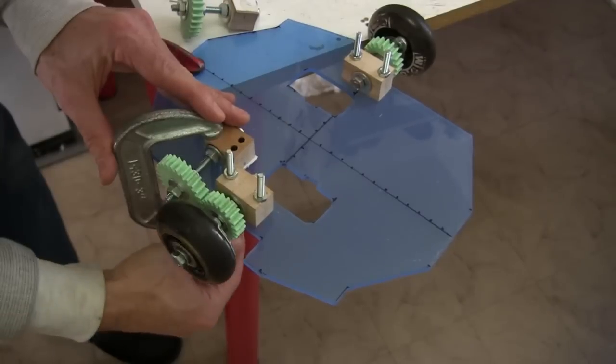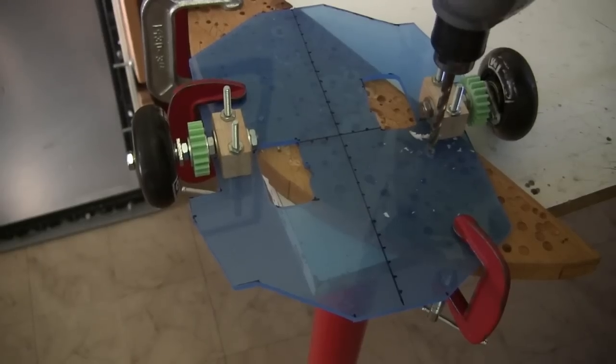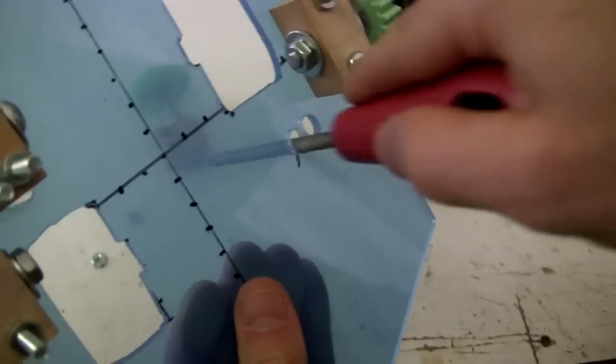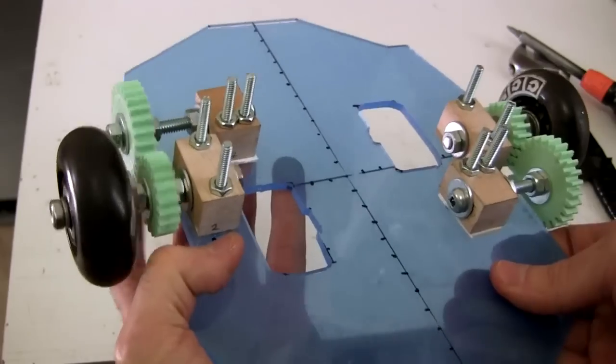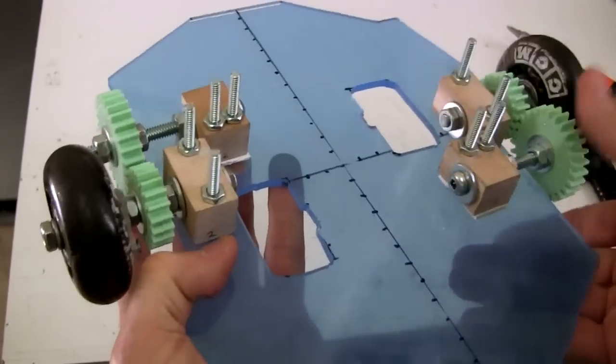After bolting them in place, it looks like this. Then I clamp on the wheel-less assemblies and drill them. After bolting the first one on, it turns well, but for the second one I have to enlarge the holes to position it in a place where it turns as well as the first one.